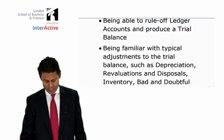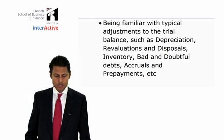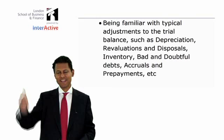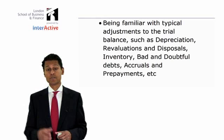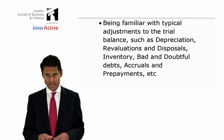Being familiar with the typical adjustments to the trial balance, such as depreciation. If you buy an asset — let's say a piece of machinery — and you pay a thousand dollars for it and it's going to last 10 years, a thousand dollars divided by 10 years is a hundred dollars. That is what's known as depreciation per annum — in other words, spreading the cost over the economic life of the asset.